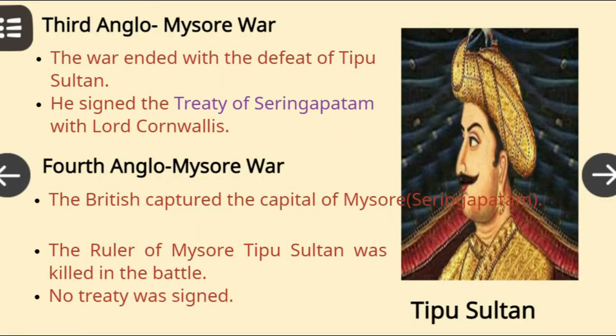The Third Anglo-Mysore War: This war ended with the defeat of Tipu Sultan. He signed the Treaty of Srirangapatam with Lord Cornwallis. The Fourth Anglo-Mysore War: The British captured the capital of Mysore, Srirangapatam. The ruler of Mysore, Tipu Sultan, was killed in this battle. No treaty was signed. In this way, we can see how the British expanded their power in India and became the master of our country.